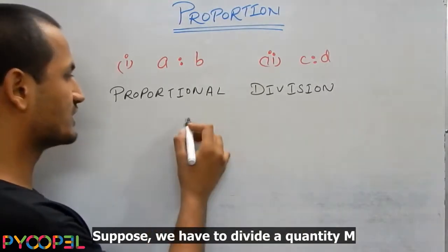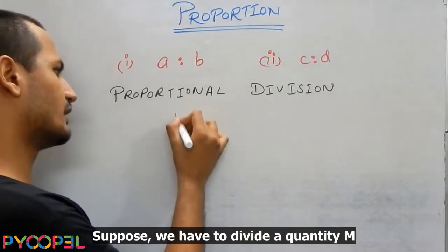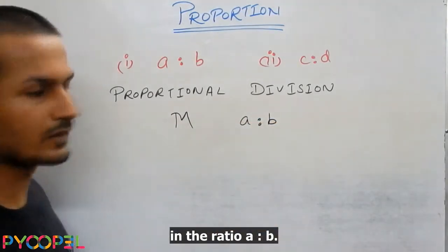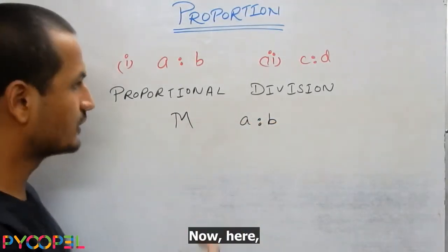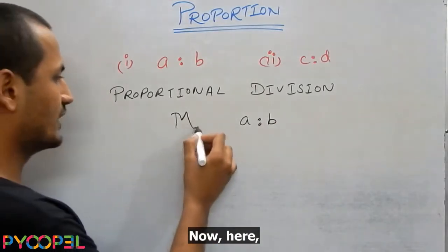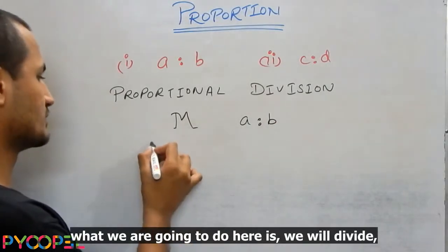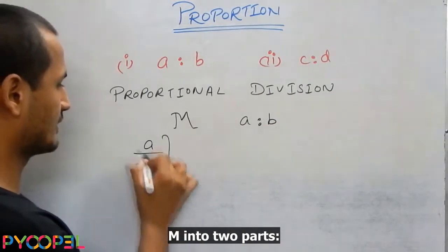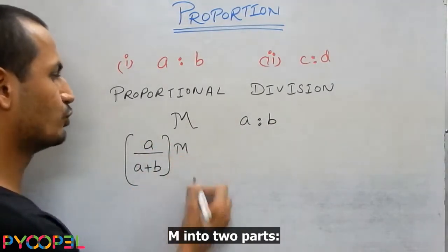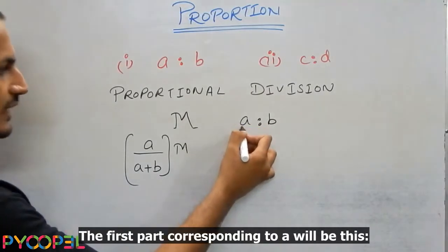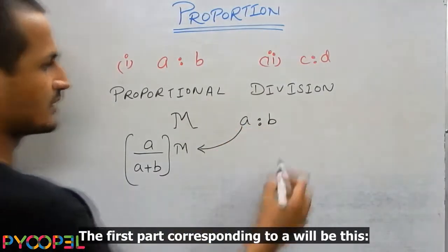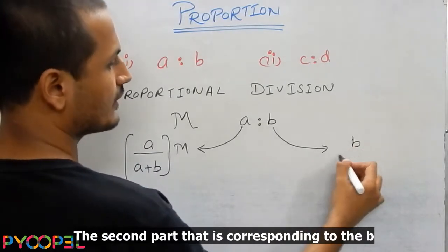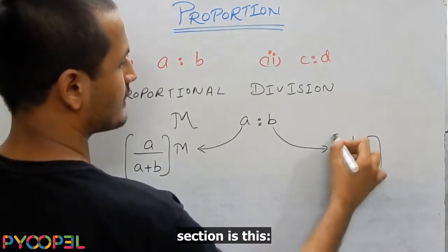Suppose we have to divide a quantity M in the ratio A to B. Now here, what we are going to do is, we will divide M into two parts. The first part corresponding to A section is this. The second part corresponding to B section is this.